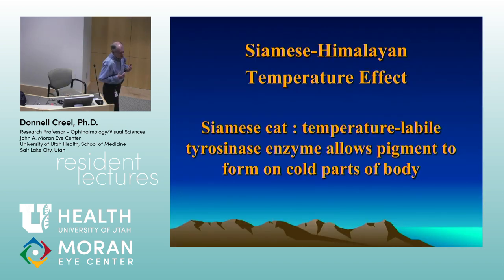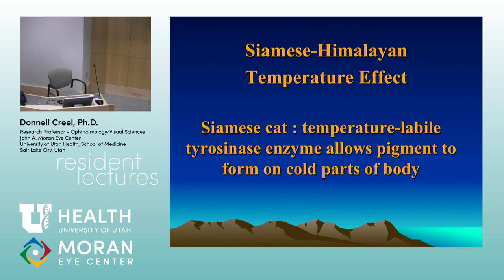The animal studied most for the effects of this — the highest animal available in numbers and closest to the primate visual system — is the Siamese cat. The Siamese cat is an albino. It's a special kind of albinism that allows pigment on the cold parts of the body.